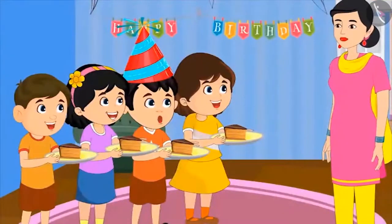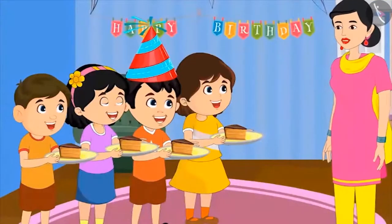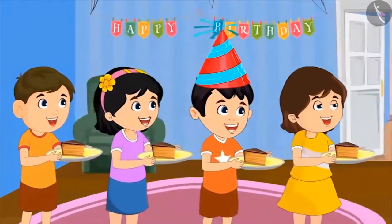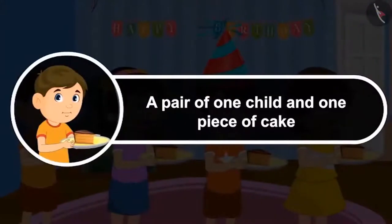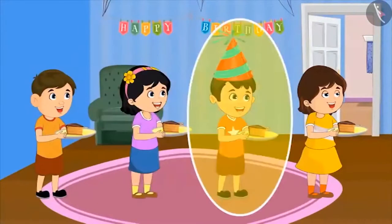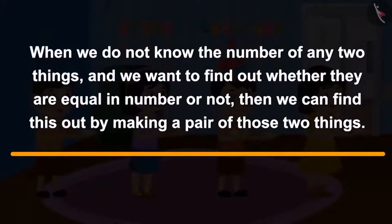We have all got a piece of cake. Yes, Chotu — although I didn't know how many children I had to give cake pieces to, as per your idea I made a pair of one child and one piece of cake and gave each child a piece. Thus all the children got a piece of cake. Similarly, when we do not know the number of any two things and we want to find out whether they are equal in number or not, we can find this out by making a pair of those two things.